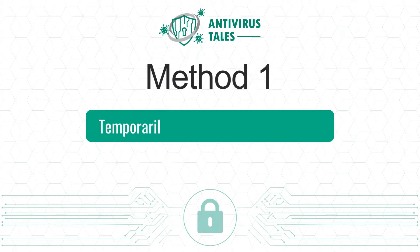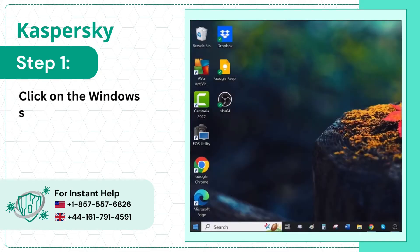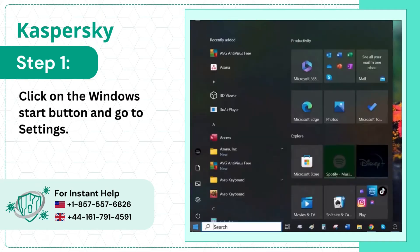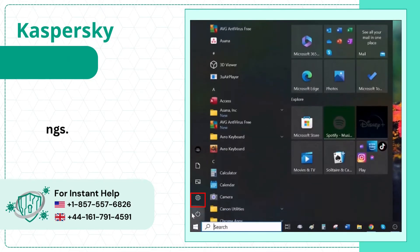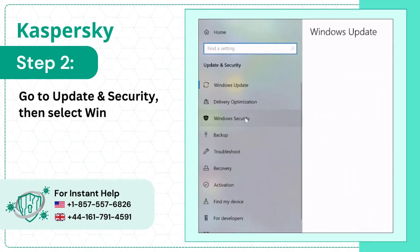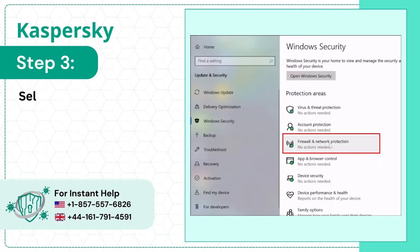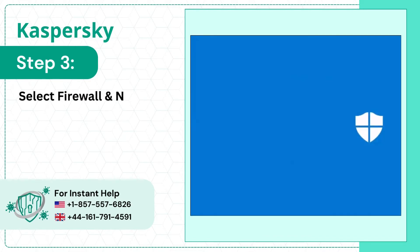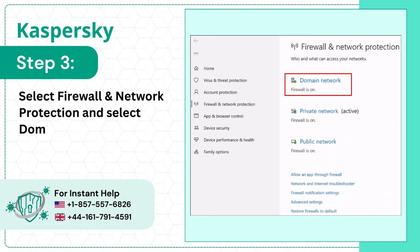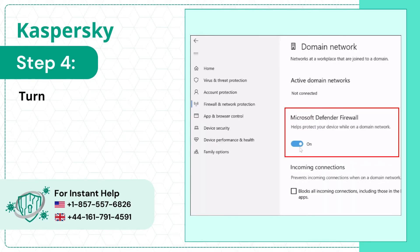Method 1: Temporarily turn off Windows Firewall. Step 1: Click on the Windows Start button and go to Settings. Step 2: Go to Update and Security, then select Windows Security. Step 3: Select Firewall and Network Protection and select Domain Network. Step 4: Turn off Microsoft Defender Firewall.